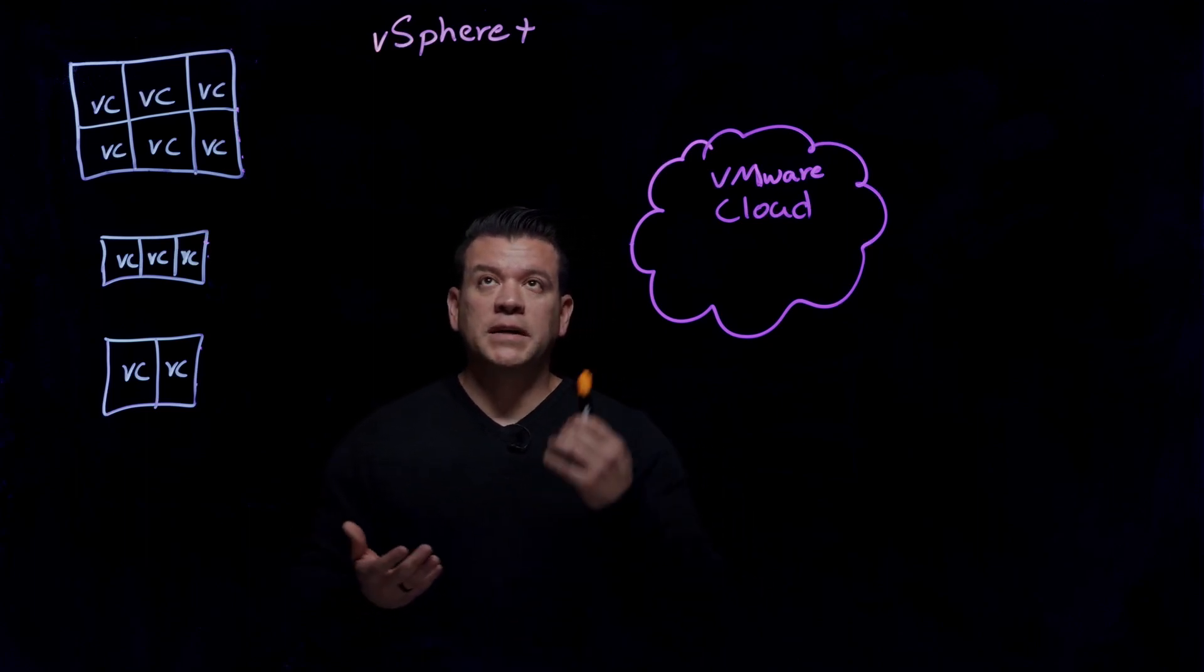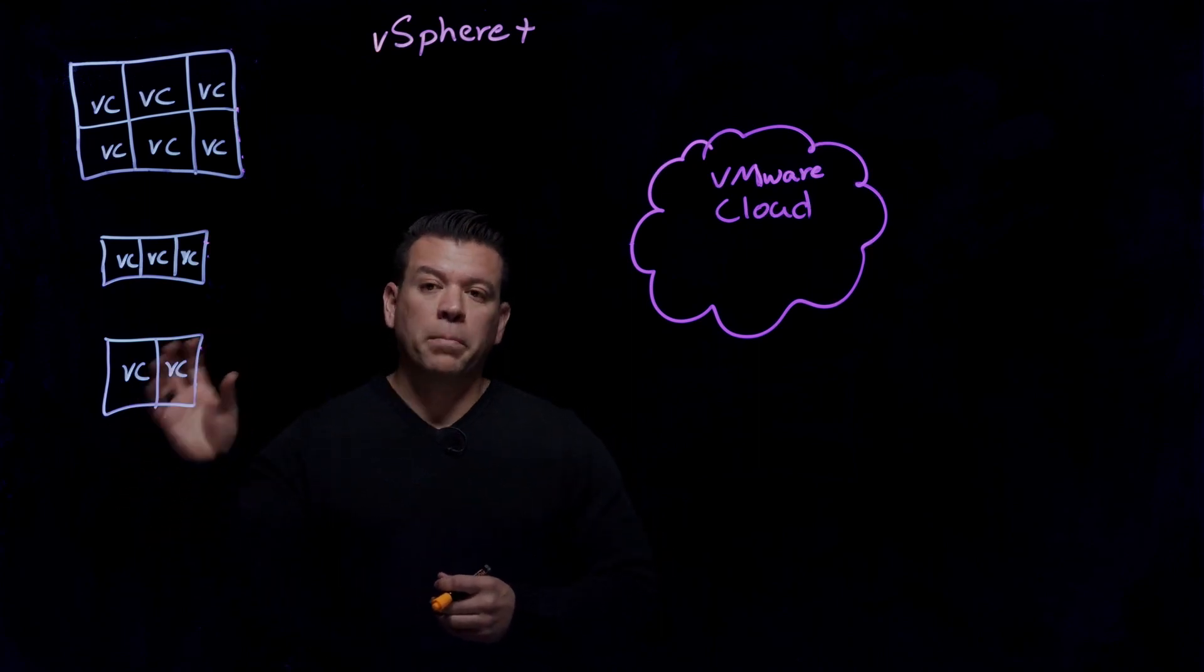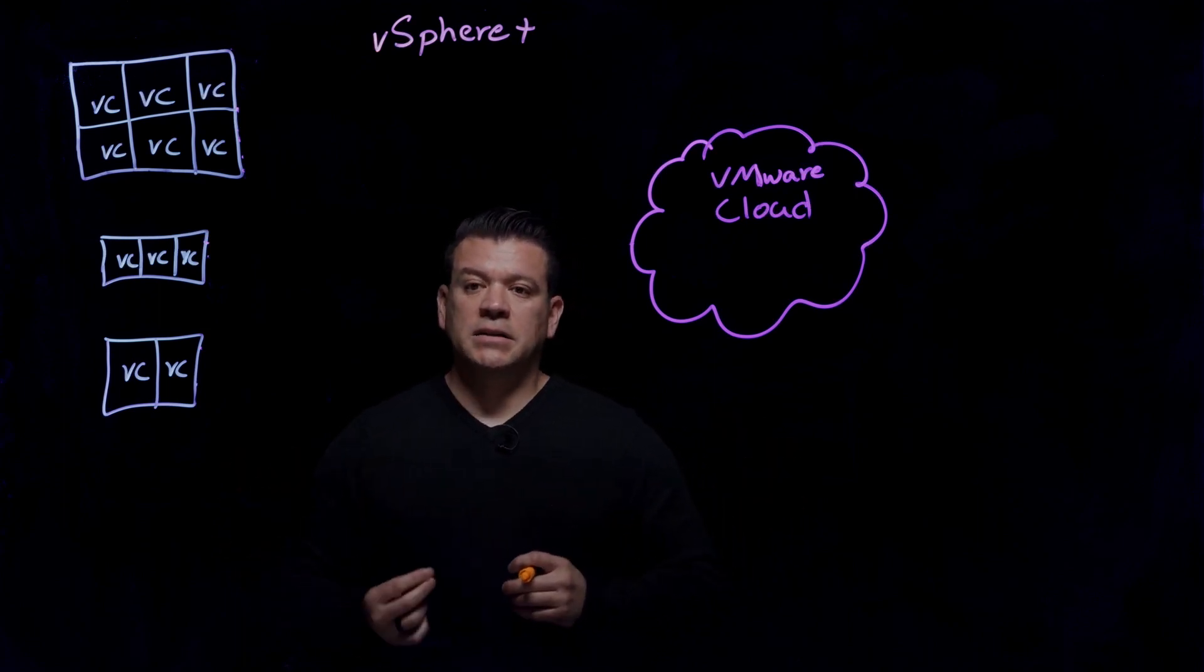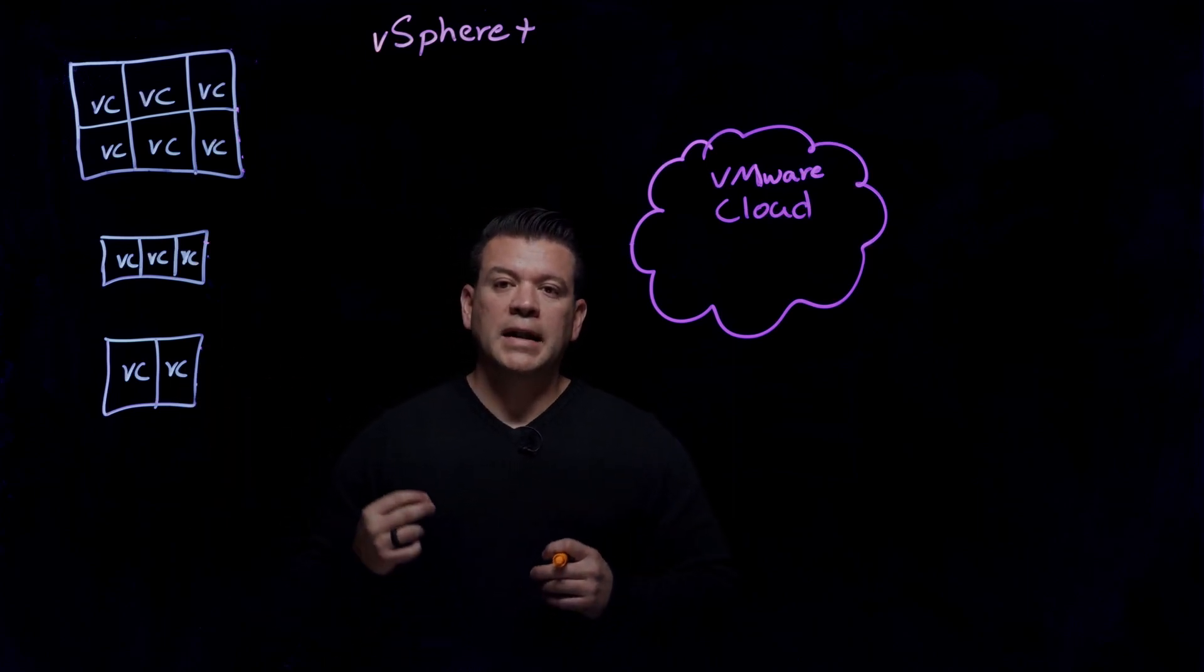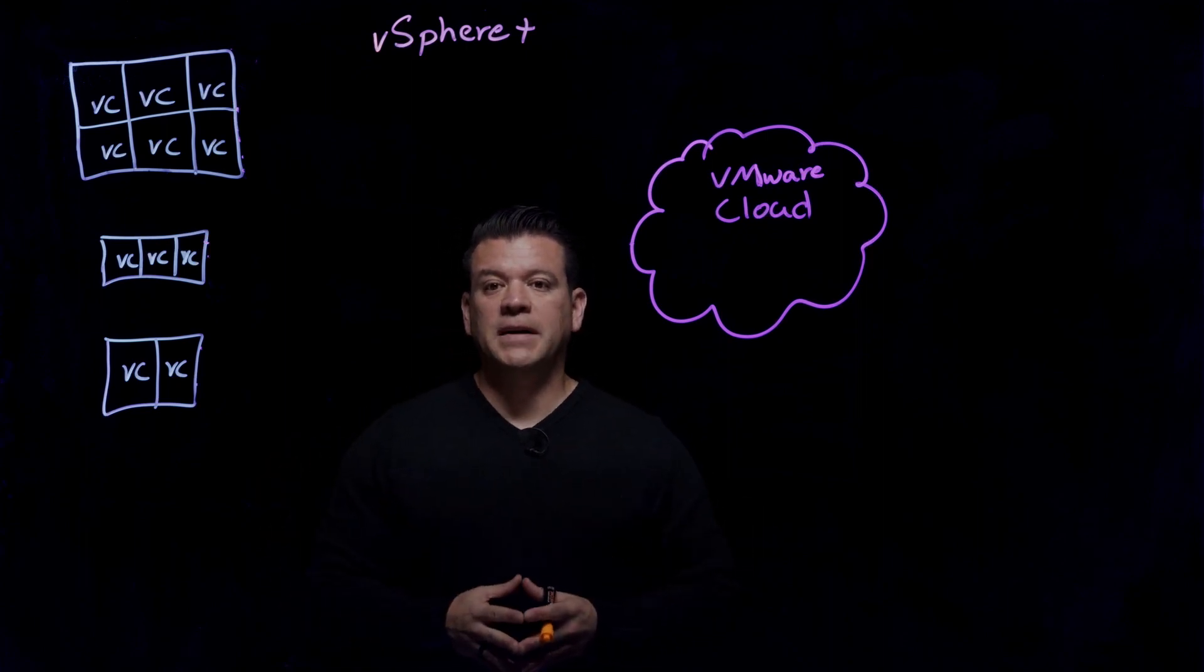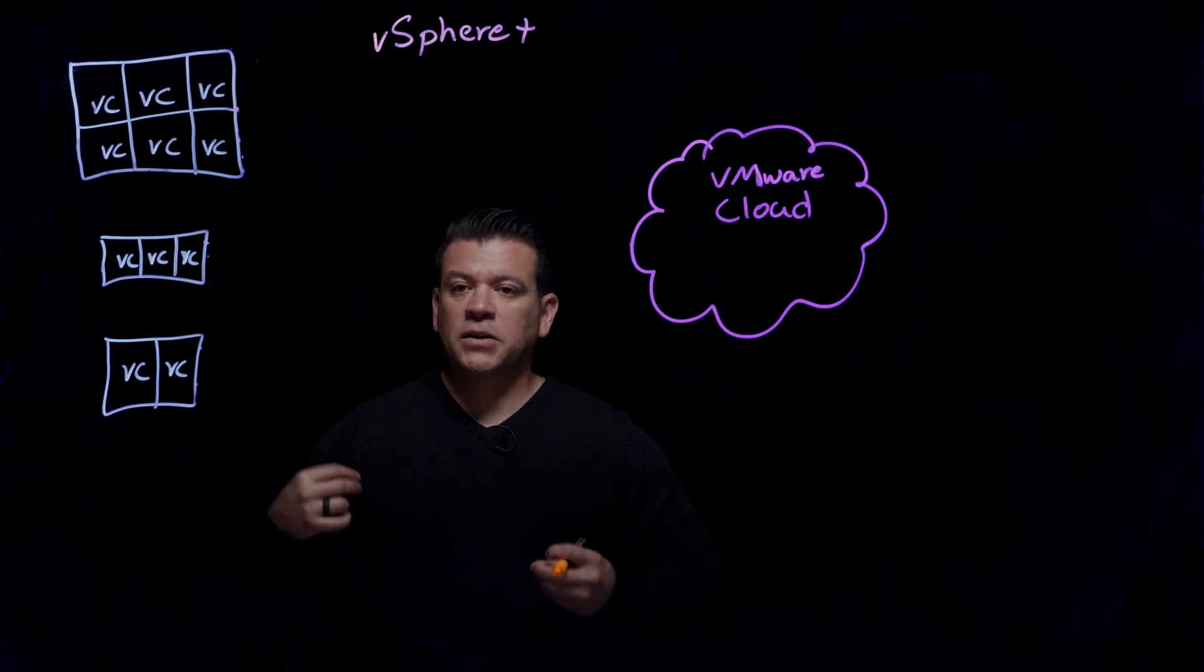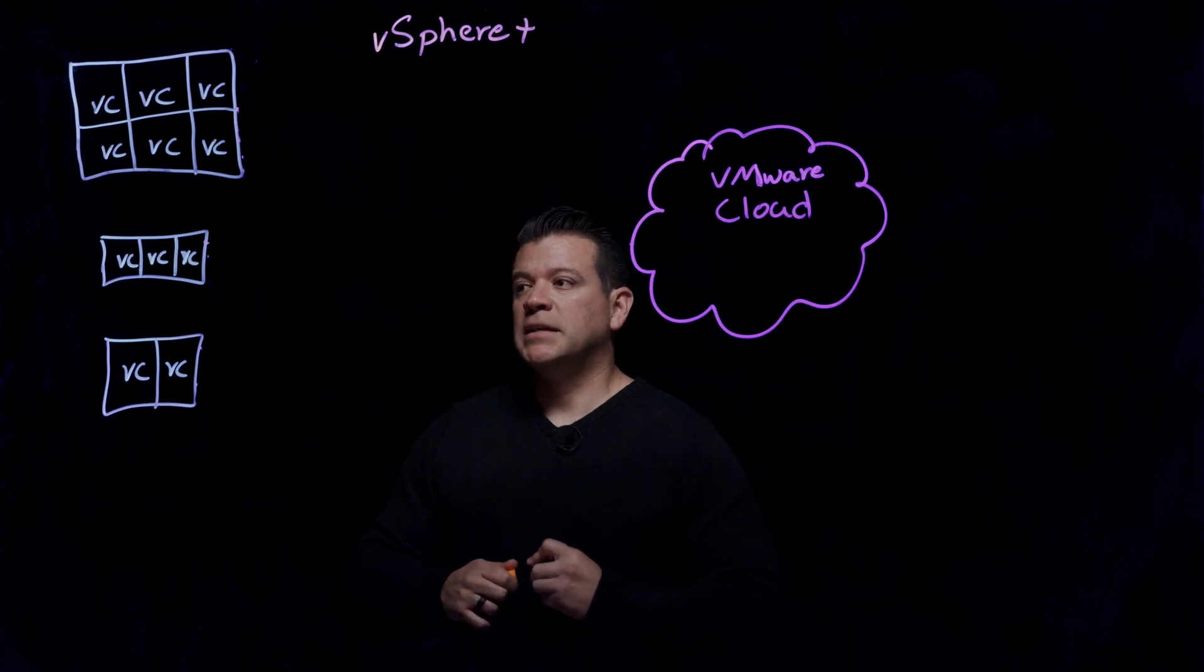So first off, we need to move to this subscription service that is vSphere Plus. It is a move from perpetual licensing to subscription licensing. So that is the VMware move to SaaS. And it's a keyless movement. So no longer do you have to keep track of all your licensing keys, especially with hundreds or thousands of keys. Once you move over to vSphere Plus, it is keyless. Think of tokens, right? You buy tokens and you can play in an arcade as long as you want, as long as you have tokens available. So connecting is super simple.